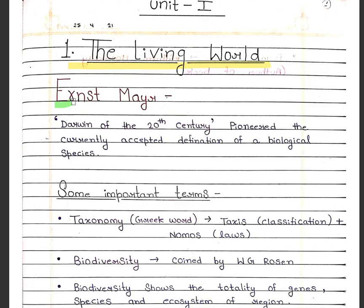The very first scientist mentioned in this chapter is Ernst Mayr. Ernst Mayr was born on 5 July 1904 in Kempten, Germany. He was one of the 100 greatest scientists of all time. He was also known as the Darwin of the 20th century, and pioneered the currently accepted definition of biological species.